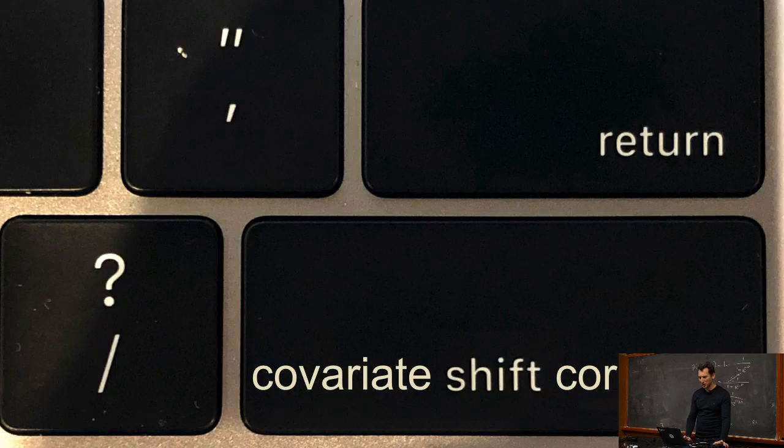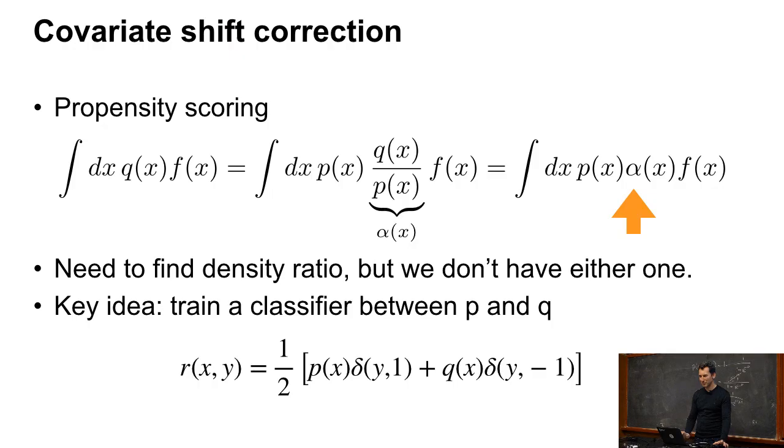So now, let's talk about covariate shift correction. Let's get back to what we had before. Remember, we had this propensity scoring.